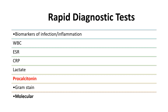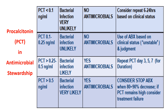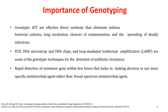We also have rapid diagnostic tests beyond standard susceptibility testing — including biomarkers such as WBC, ESR, CRP, lactate, procalcitonin, Gram stain, and molecular tests. Procalcitonin is a biomarker for sepsis and other infections: if procalcitonin is less than 0.1, bacterial infection is very unlikely and antimicrobials could be withheld; if more than 0.5, bacterial infection is very likely and antimicrobials should be started. Consider stopping antibiotics when an 80–90% decrease in procalcitonin is observed under clinical conditions.